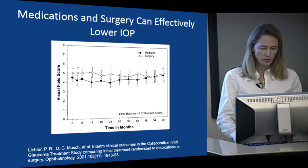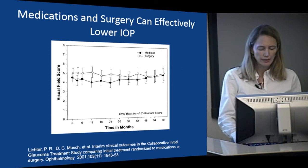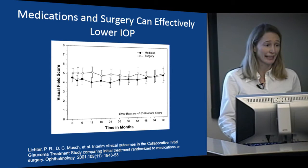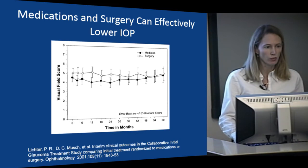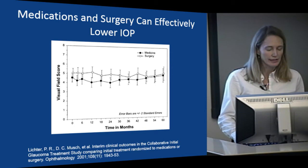How can we lower the pressure? Both medications and surgery can be effective. The Collaborative Initial Glaucoma Treatment Study randomized patients to initial surgery or initial medication and found that both were very good at lowering intraocular pressure and preserving visual field, though there were more side effects with surgery. So in most cases we start with either topical eye drops or laser treatment, which is considered non-invasive, before going to incisional surgery.